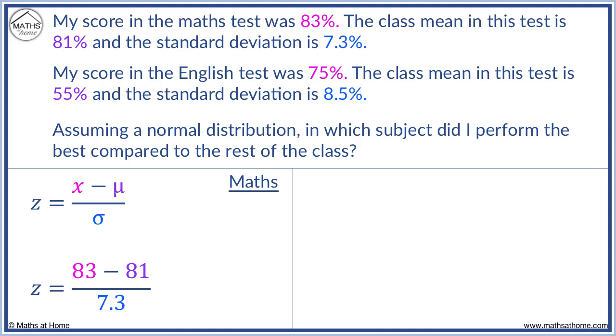83 minus 81, all divided by 7.3, equals 0.274. The maths z-score is 0.274.